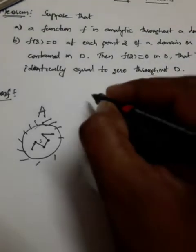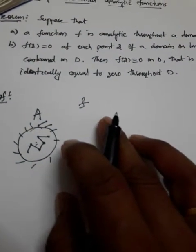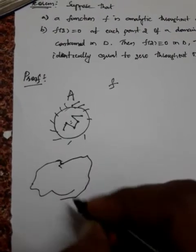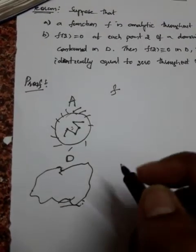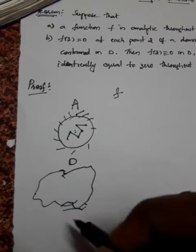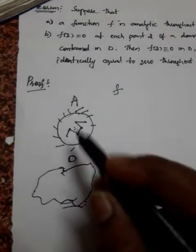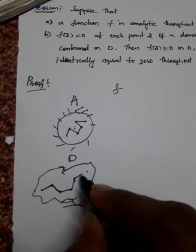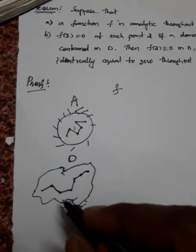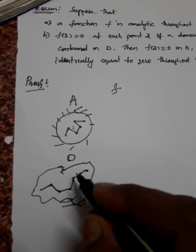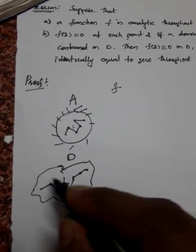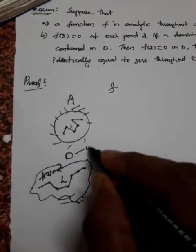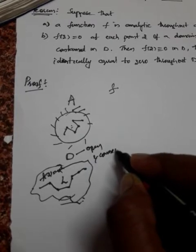Now for the proof: f is analytic throughout domain D. Let us take a domain D where f is analytic. D is also an open and connected set, meaning any two points can be connected by a polygonal arc. And f(z) equals zero on a line segment L or subdomain contained in D. D is open and connected.